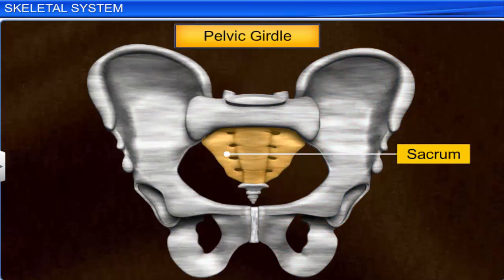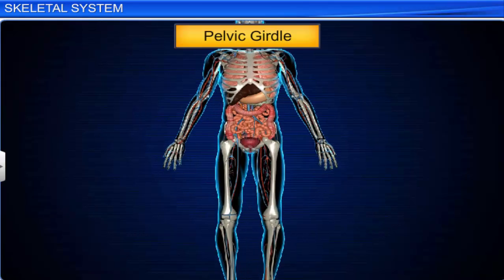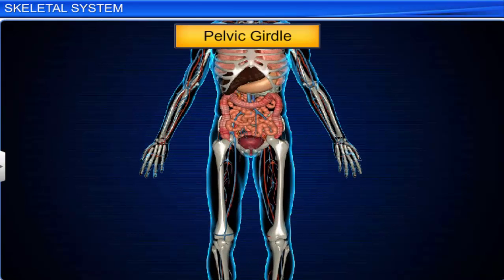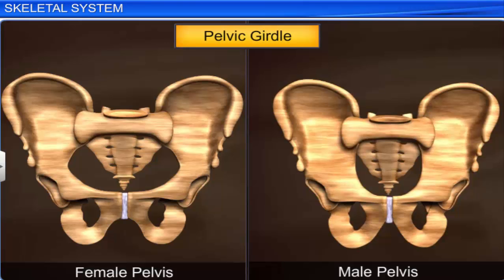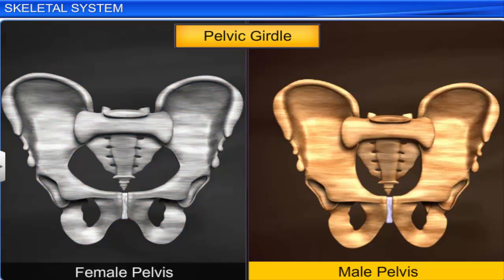While these bones meet ventrally with the help of fibrous cartilage to form the pubic symphysis. The pelvic girdle not only supports the limb bones but also protects the abdominal organs like the reproductive organs and urinary tract. In fact, the female pelvis is wider than the male pelvis to facilitate childbirth.